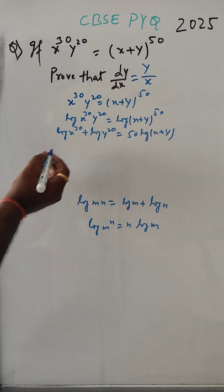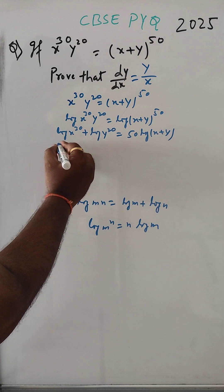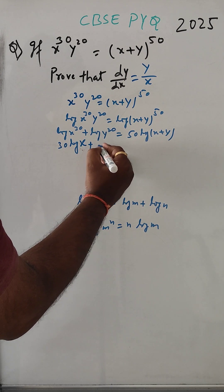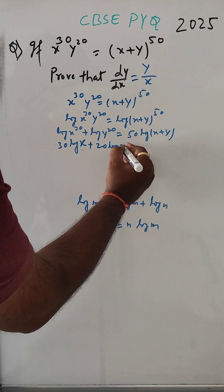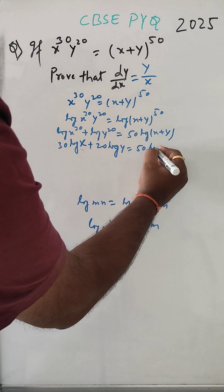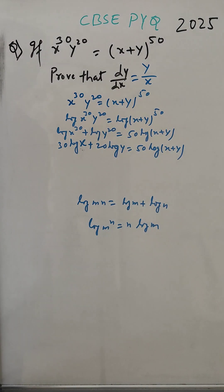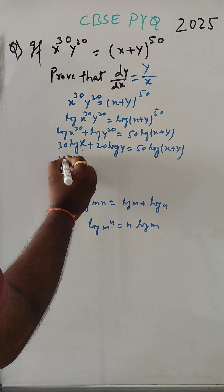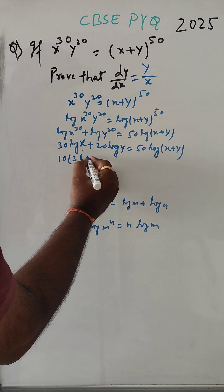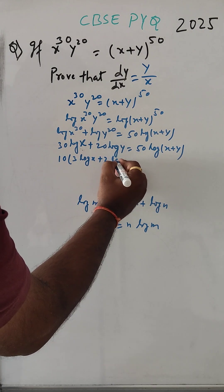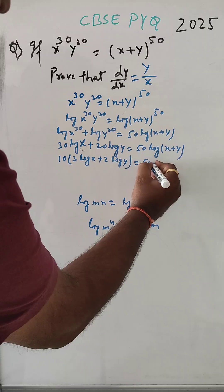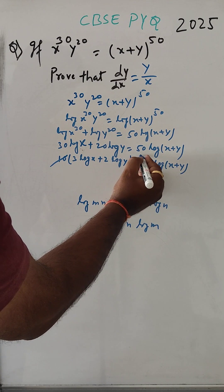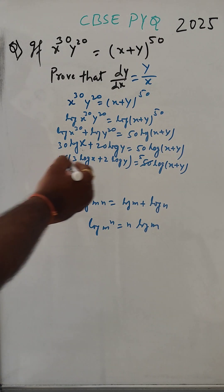So this much, and now for x to the power 30 we can use this formula. So, 30 will come out as 30 log x, and here 20 will come out as 20 log y, and here 50 log of x plus y. And here we can take 10 common: it becomes 3 log x plus 2 log y, and here 5 log of x plus y. This 10 and 10 get cancelled — 10 into 5 gives 50.